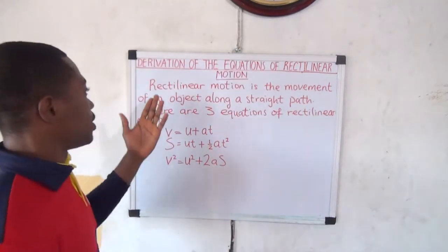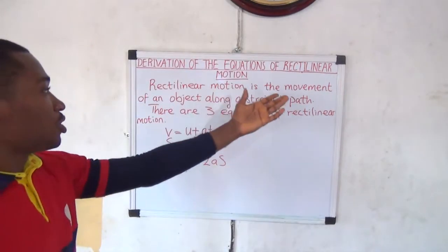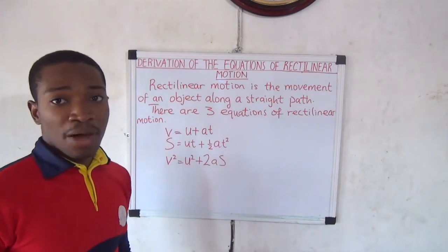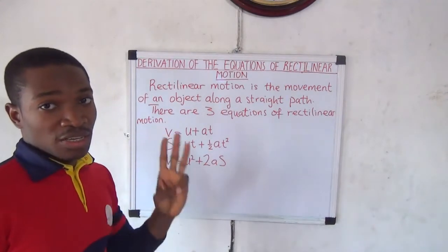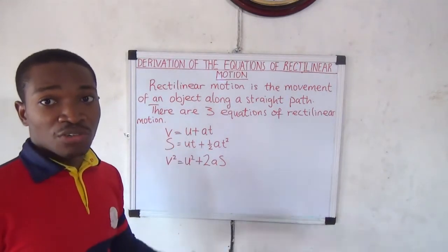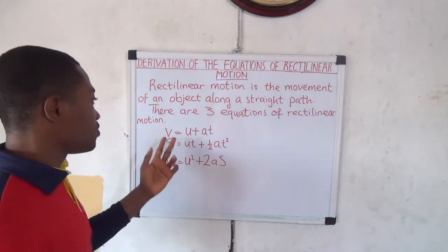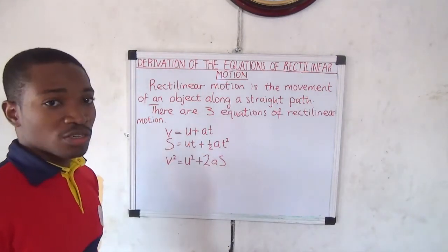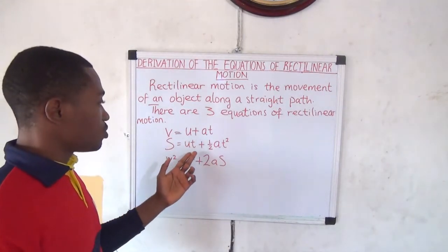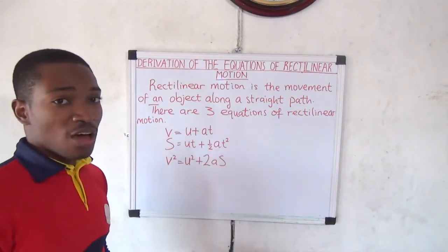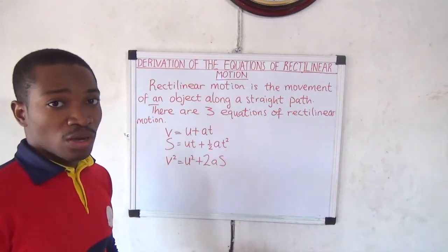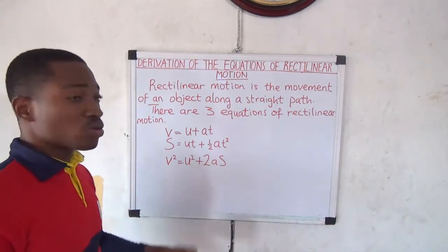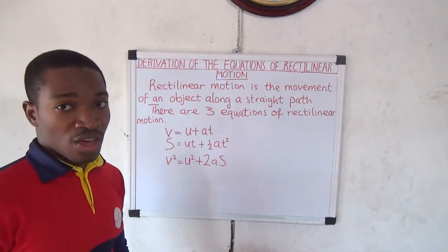Rectilinear motion is the movement of an object along a straight path. There are three equations of rectilinear motion. The first one is V equals U plus AT. The second one is S equals UT plus half AT squared. And the third one is V squared equals U squared plus 2AS.